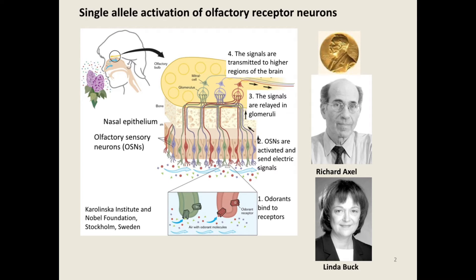Olfaction, the sense of smell, is essential for the survival of most living organisms. What I show here is the nasal epithelium of a human nose, which has millions of olfactory sensory neurons. Each neuron has many transmembrane olfactory receptors. Odorants bind to the receptors, and the neurons send electric signals to the brain, so we can smell different odors.